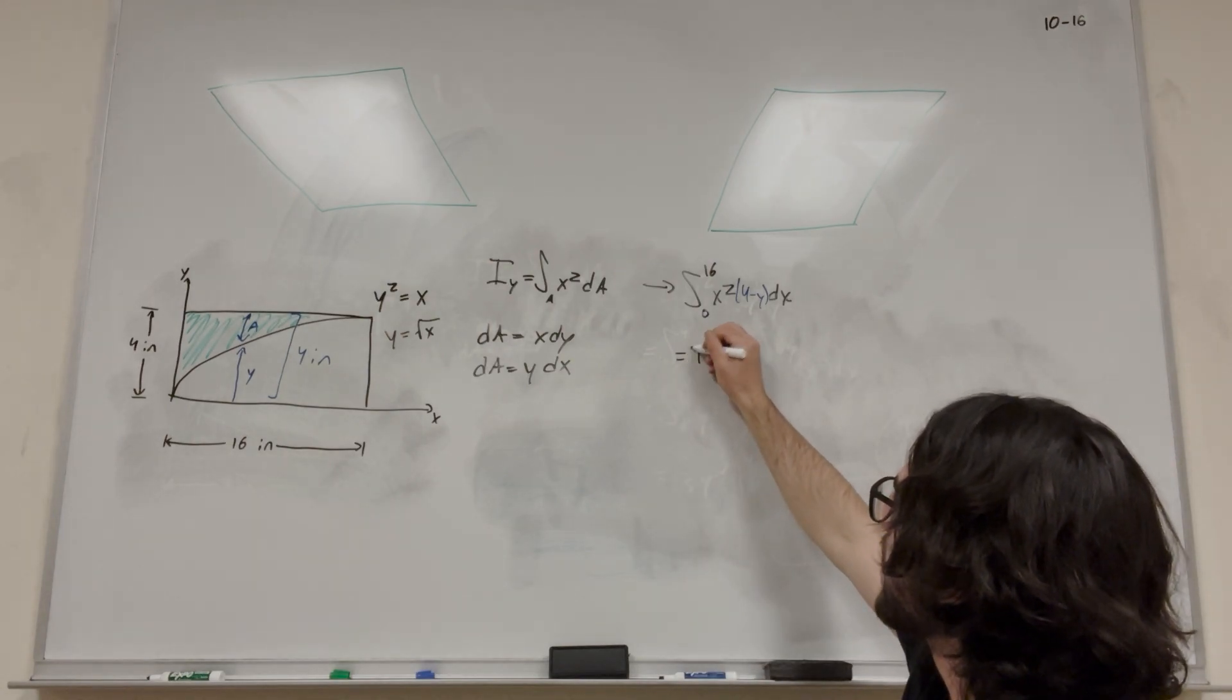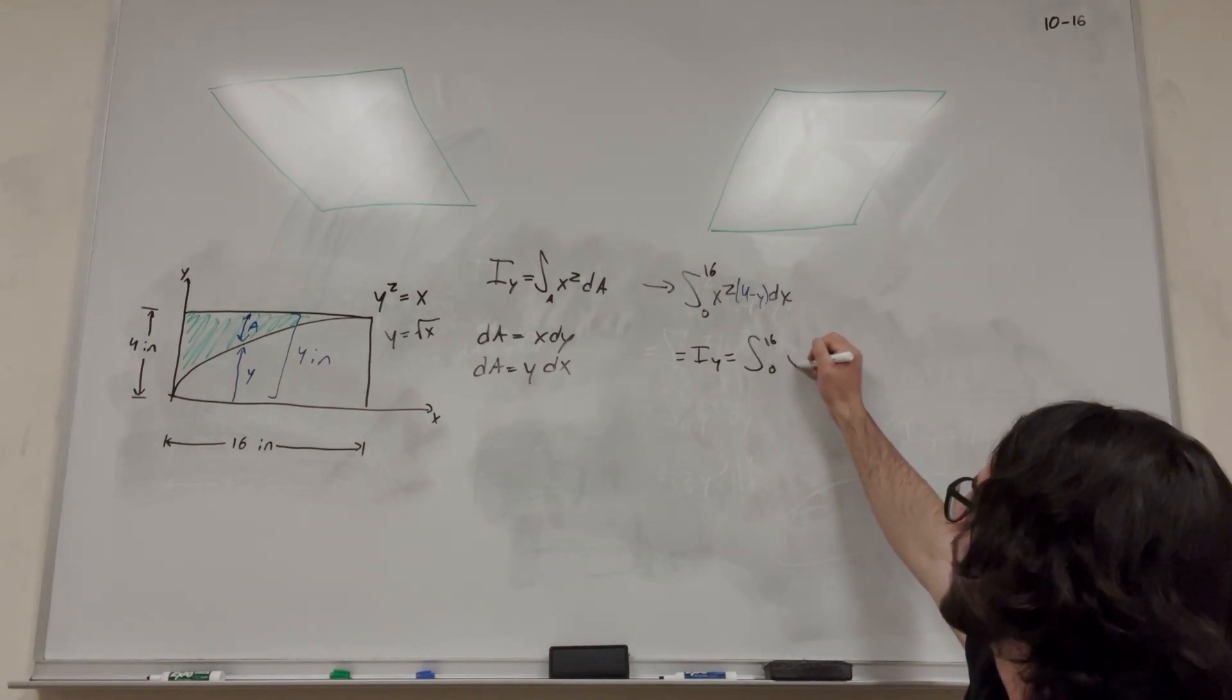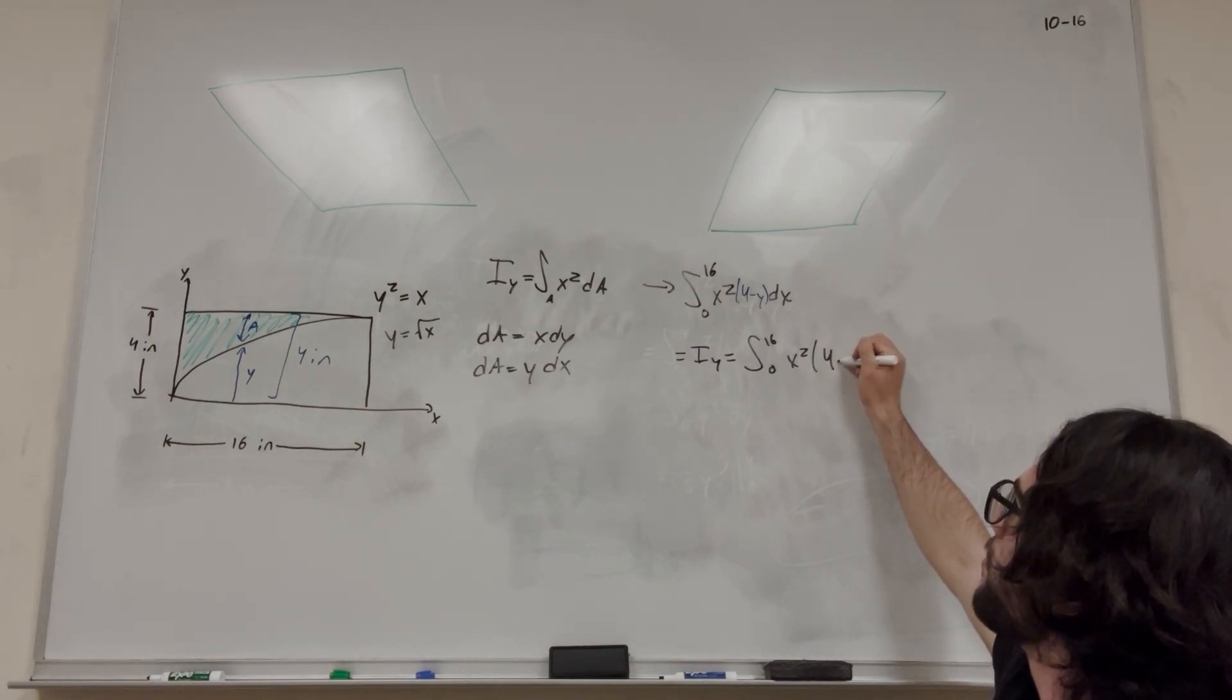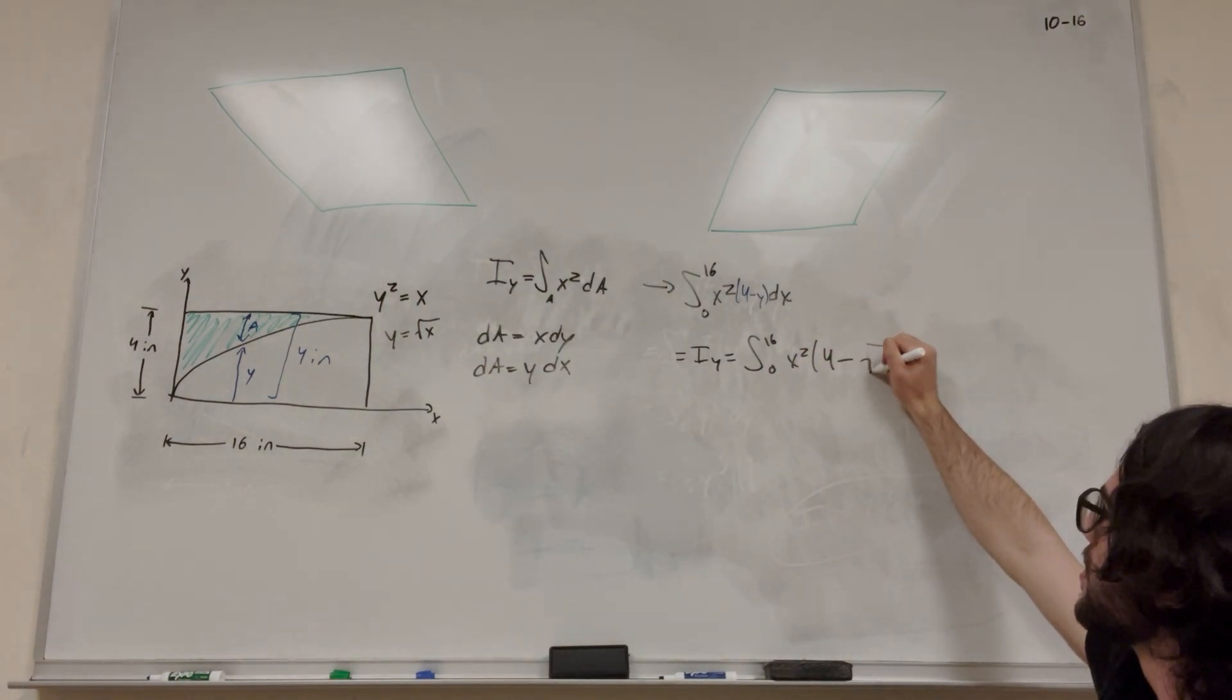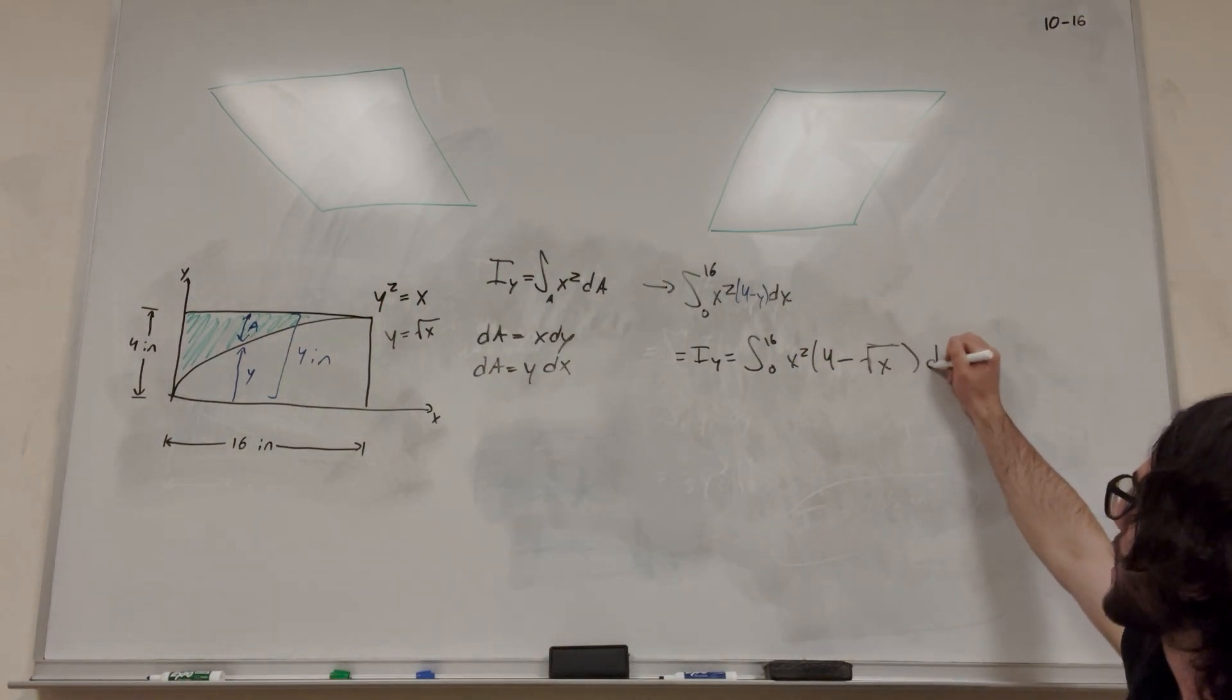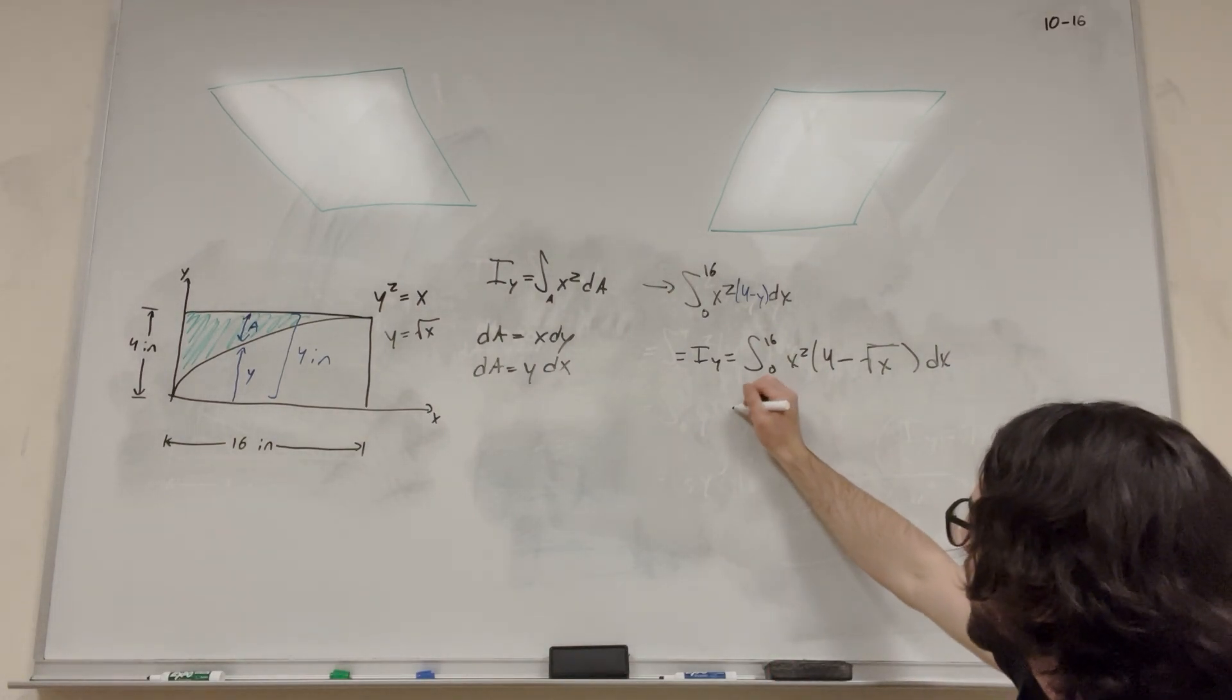So we can say that this equals the integral from 0 to 16 of x squared times (4 minus square root of x) dx. Now we have something we can actually integrate and get a number out of. Let's go ahead and do that.